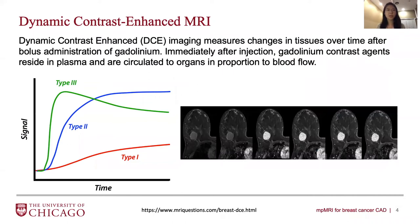One sequence is called the Dynamic Contrast Enhanced sequence, where we take one image beforehand and inject a contrast agent into the patient and take a sequence of images afterwards. There are different contrast enhancement and washout patterns in different tissue types, which help radiologists categorize lesions.